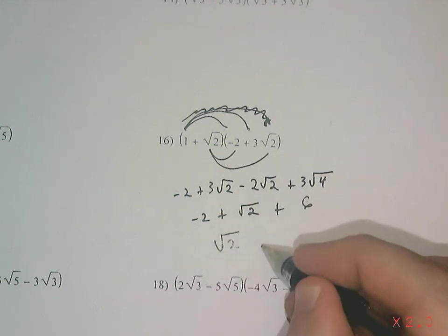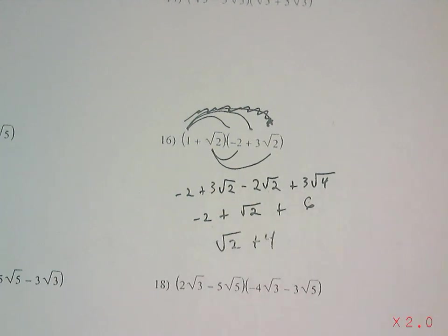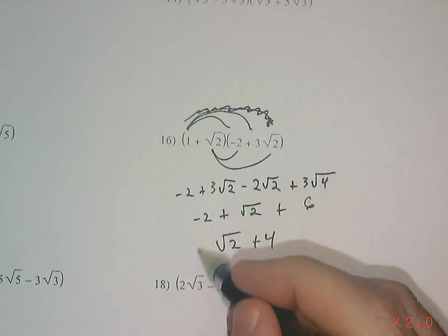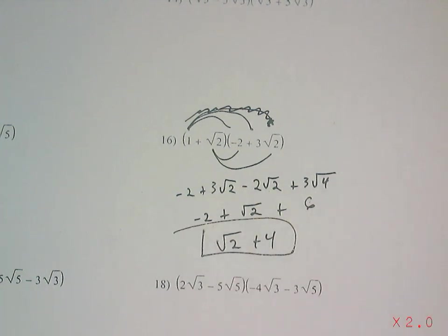So I'm going to have the square root of 2 and then plus 4, and that is my final answer there. And that's what you're doing with multiplying radicals.